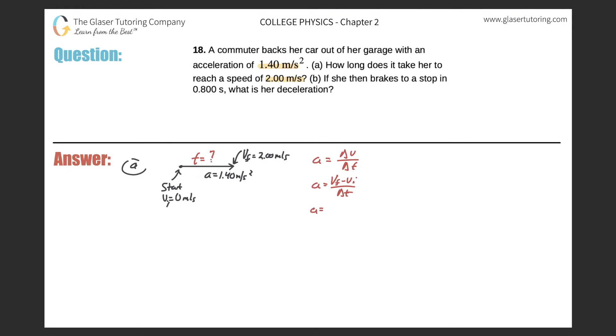So the final velocity in this problem is 2.00 meters per second. The initial velocity was zero meters per second. And the time it took her to travel this distance is the question. So t is our variable. Now let's just plug in the acceleration. I'm just going to erase that because they gave it to us. The value was 1.40. So I can plug that in. So 1.40 meters per second squared.